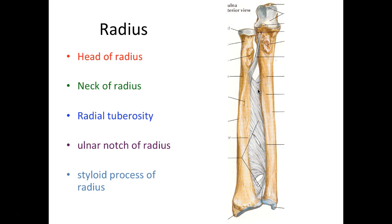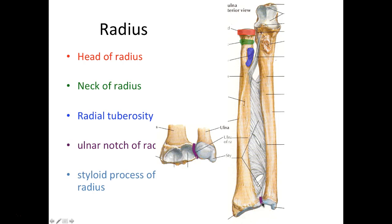Let's look at these bones in detail, starting with the radius. This hockey-puck disc-shaped structure up here is the head of the radius. The constricted portion below is the neck of the radius. Below that area we'll see a rough and perforated bump called the radial tuberosity. On the radius there is also a little notch called the ulnar notch of the radius, which allows the head of the ulna to articulate here with the radius.